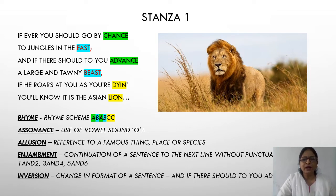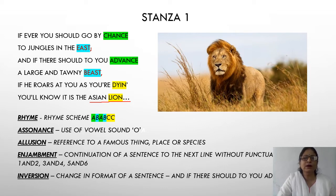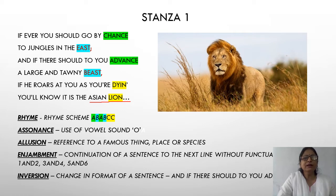Next is allusion — a reference to a famous thing, place, or species. Here the Asian lion is being referred to; that is allusion. Next is enjambment: the continuation of a sentence to the next line without a punctuation mark. In the first line, 'If ever you should go by chance' — there is no comma, so the line proceeds to 'To the jungles in the east.' The first and second lines form one sentence with no punctuation in the middle. Similarly in the third and fourth lines, and the fifth and sixth lines.